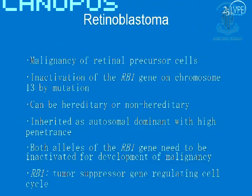I'll talk about retinoblastoma here. Many people don't need this introduction, but it's a malignancy of the retinal precursor cells. You can have inactivation of the RB1 gene on chromosome 13 by mutation. There are hereditary as well as non-hereditary forms of retinoblastoma, and it is usually inherited as an autosomal dominant disorder with very high penetrance. Both alleles of this gene need to be inactivated for development of malignancy.